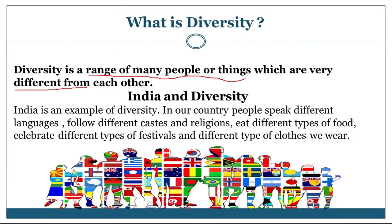For example, in a country there can be people who speak different languages, people who follow different religions, people living in different regions following different cultures and food habits — all these things make them different from each other. Similarly, in a kitchen you can find different types of things, and different species of animals exist which are different from one another.